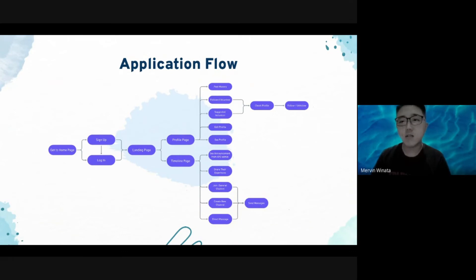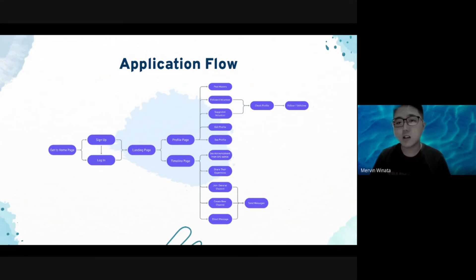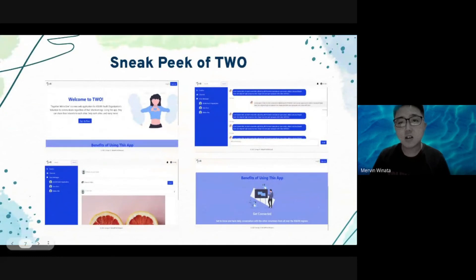Next, the flow of the app will be explained by Marvin. Here's the flow of the app: first, users arrive on the landing page. To access the features, the user has to sign up or log in. After logging in, the user will arrive on the timeline page, where they can check announcements from AYO admin, updates on AYO events, and create posts — sharing knowledge, asking questions, or any other content. From this page, they can access channel and direct message features to chat with other volunteers, or create a new channel. There is also a profile page where users can see their profile, post history, friend list, and suggested friends, and follow other volunteers.